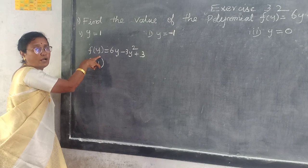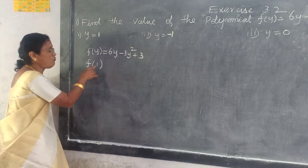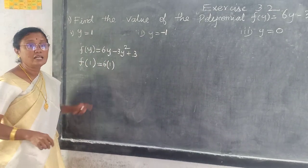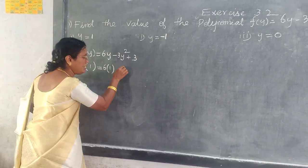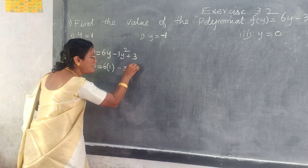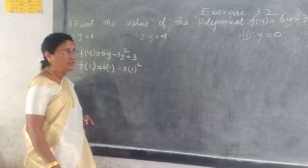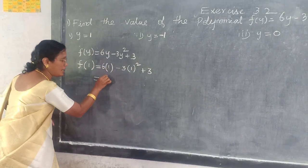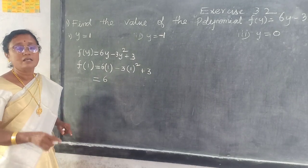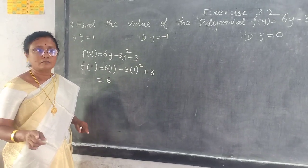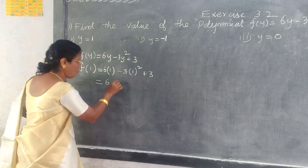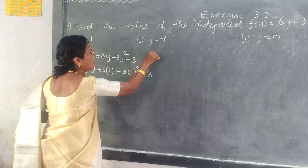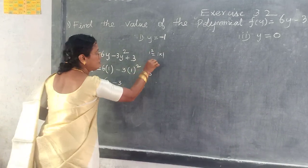Here it is given f of y. Here it is f of 1 equal to 6 into 1, minus 3 into 1 squared. 1 squared means what? 1 into 1, which is 1.